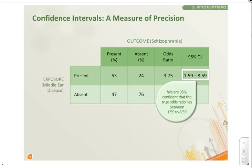The odds ratio is statistically significant, as it does not cross the line of no effect, which is 1. The value of no effect is 1 for ratios, and 0 for differences.